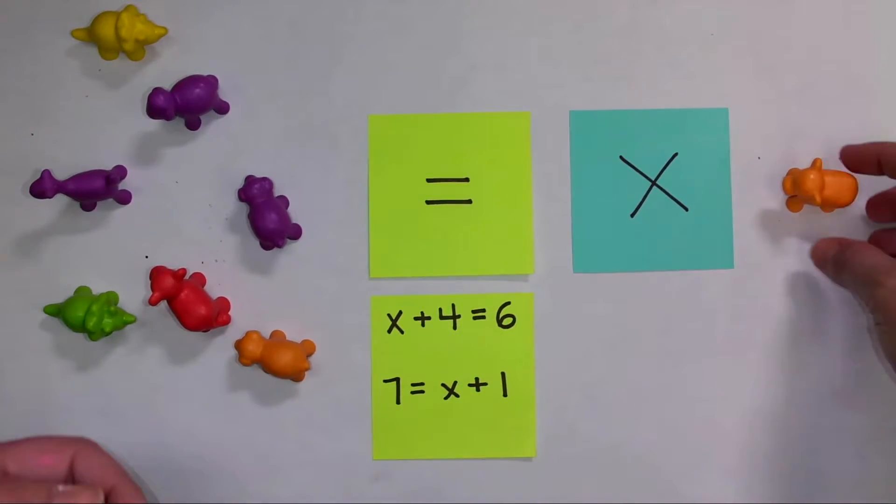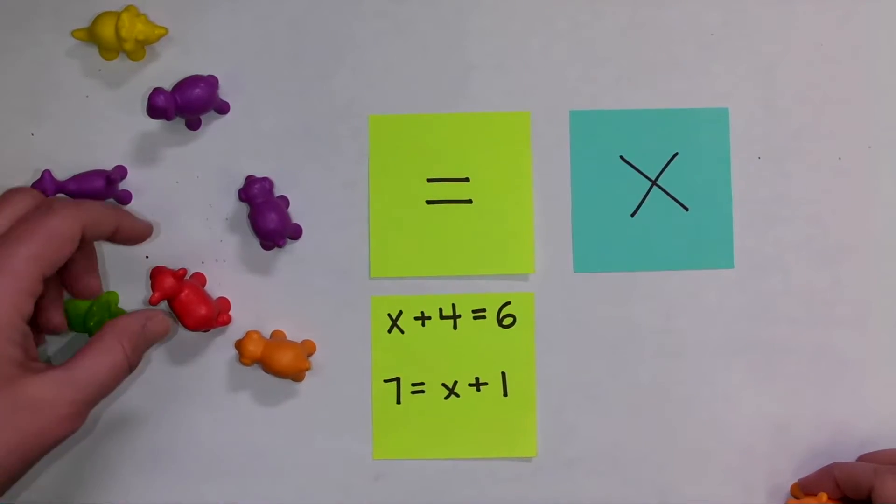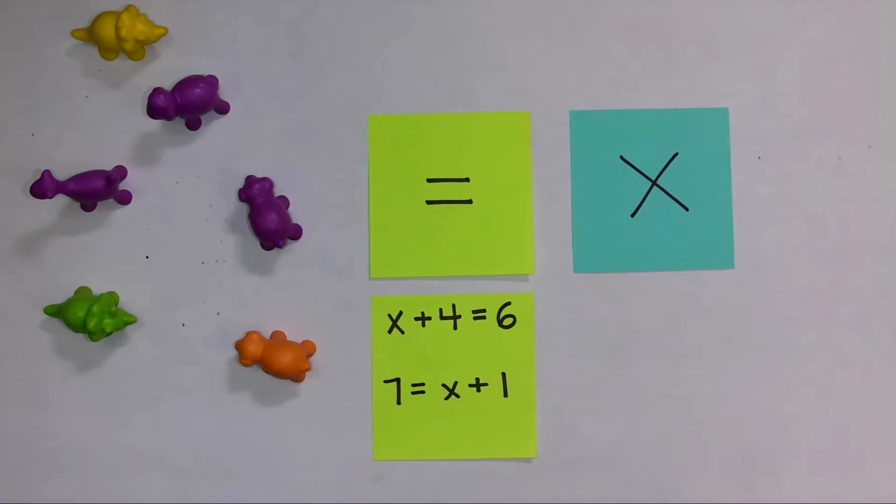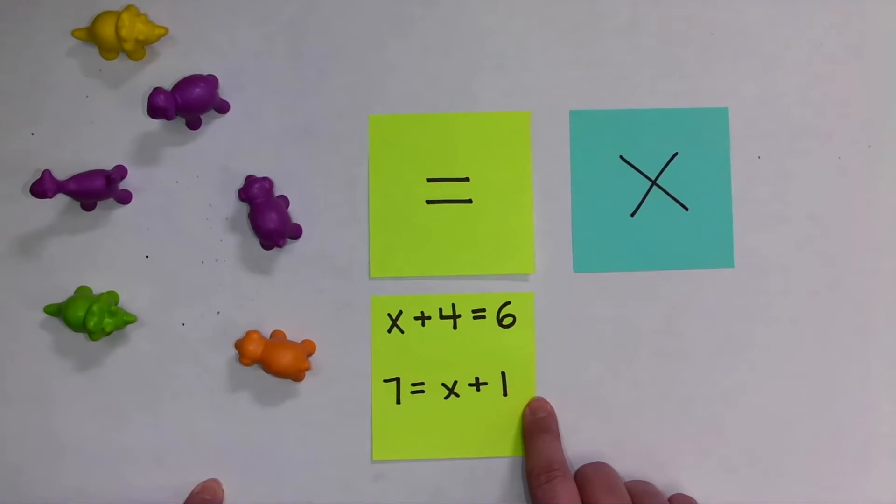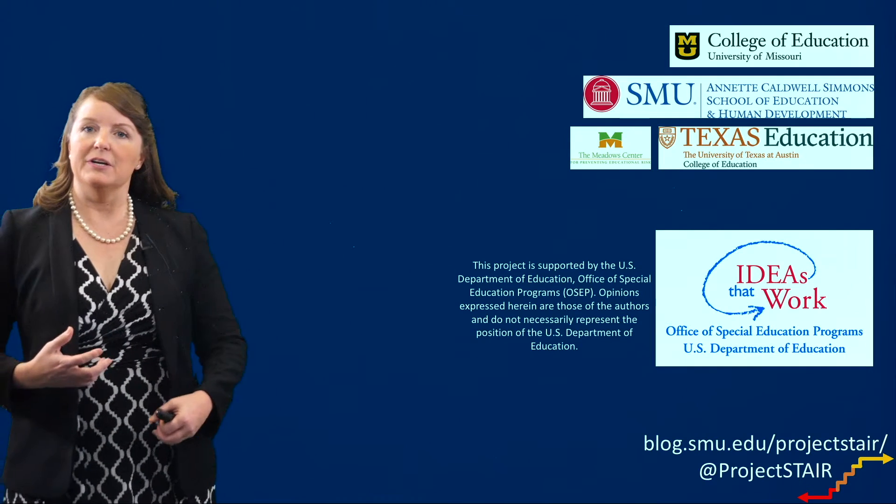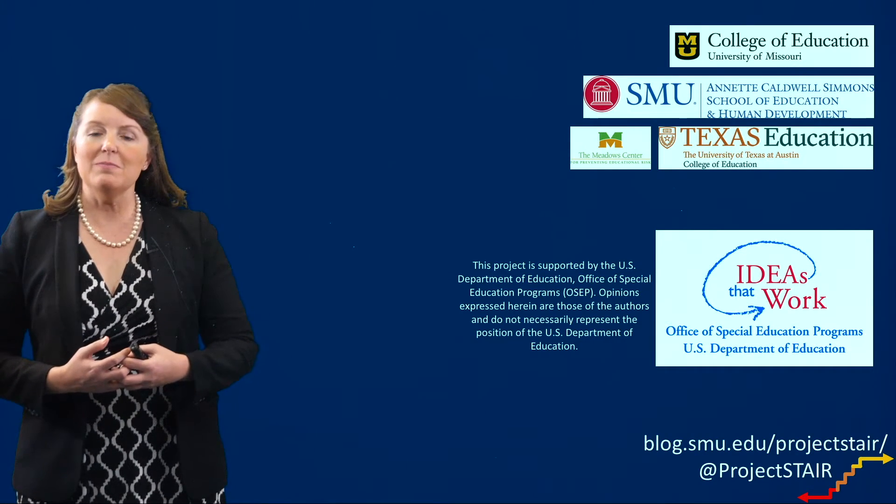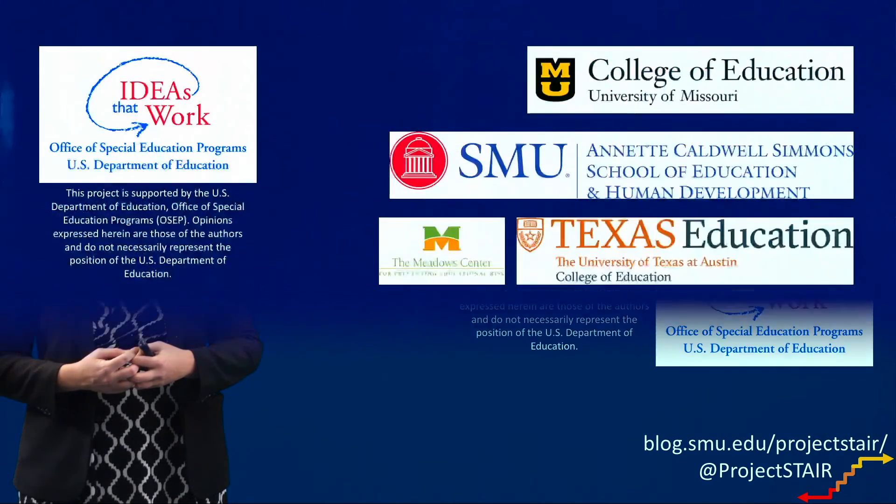I'm going to remove this constant to isolate the variable. If I remove one from that side of the equal sign, I have to remove one from this side. Now I can see one, two, three, four, five, six equals x. If I plug that back into the equation, 7 does equal 6 + 1. So those are some ways we can use everyday classroom materials to help students understand what it means to solve one-step equations. Thank you.